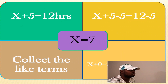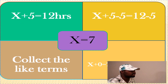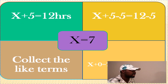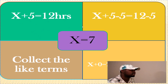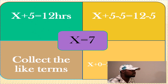It doesn't matter what letter we choose to represent the unknown. Knowing that she has studied for a certain amount of hours — which we don't know — plus five more hours she needs to study, all of these will equal 12 hours total. Now we have numbers and letters, so the next thing we have to do is collect the like terms: put numbers on one side and letters on the other side.